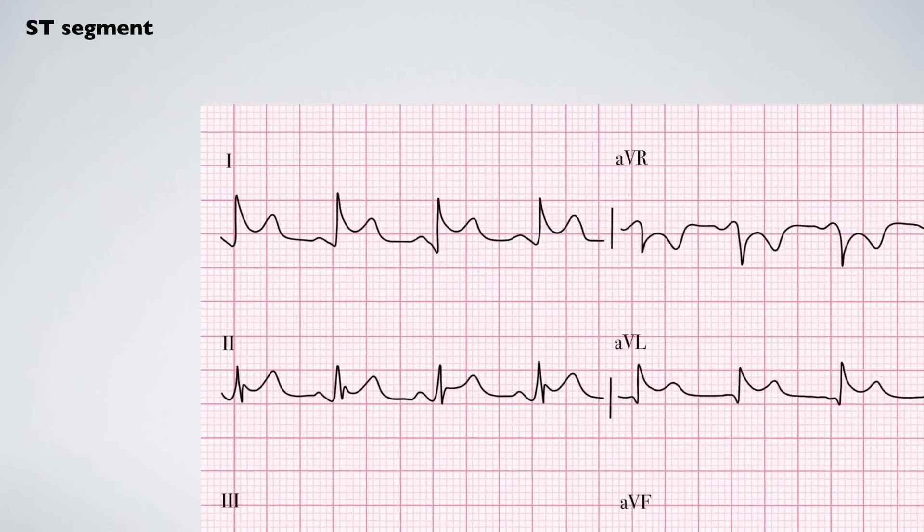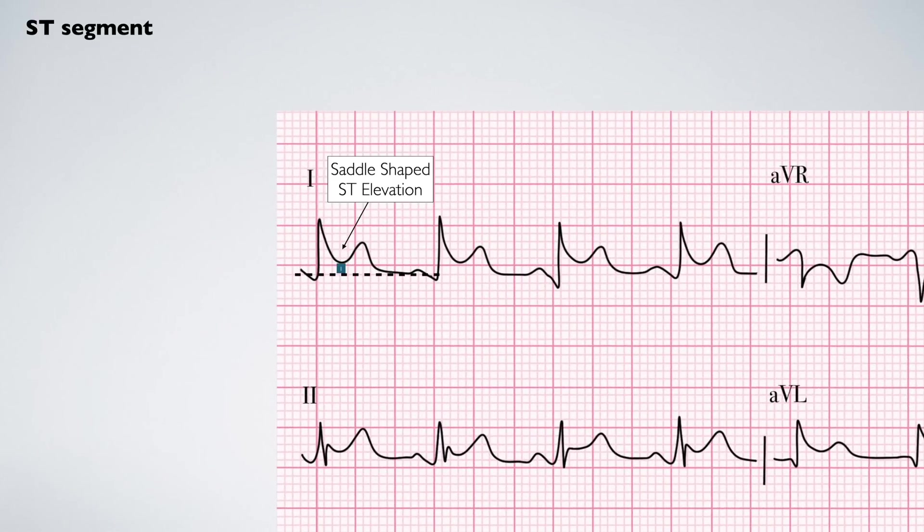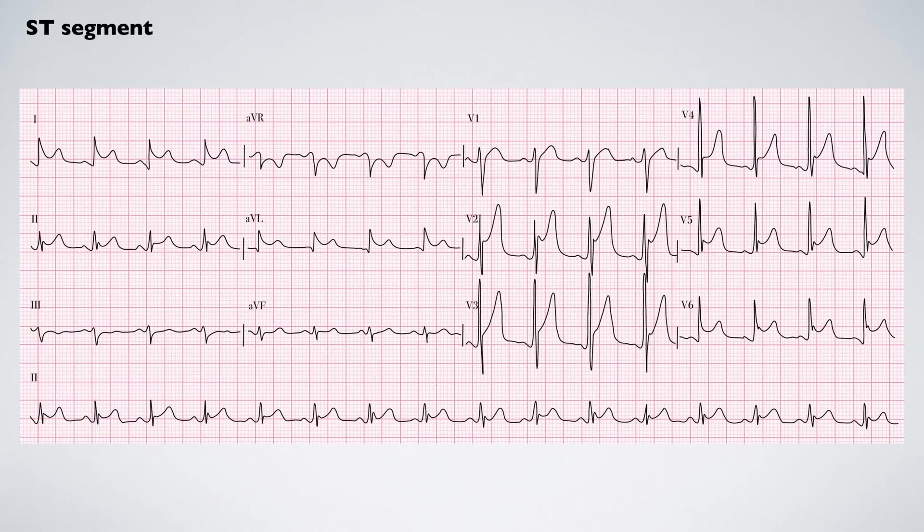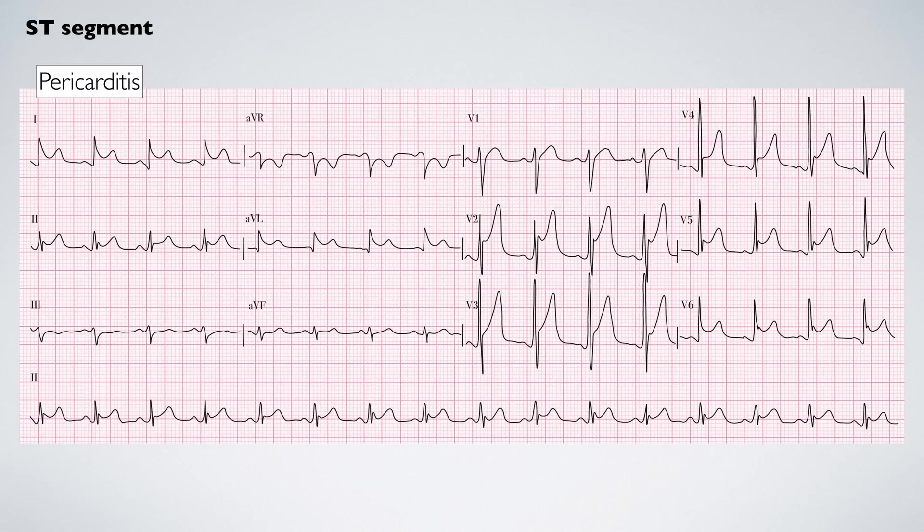In this final image, there is saddle-shaped ST elevation which occurs throughout almost all territories. This is the typical appearance of pericarditis.